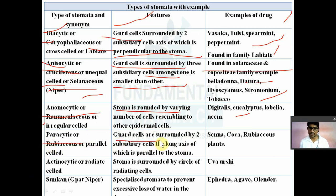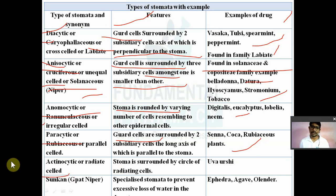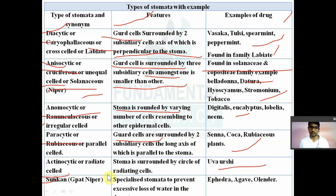The fourth type is paracytic stomata, also known as parallel-celled stomata or rubiaceous stomata. Here, guard cells are surrounded by two subsidiary cells whose axis is parallel to the stoma — guard cells and epidermal cells are arranged parallelly surrounding the stoma. This type of stomata is present in senna, coca, and rubiaceae plants. The fifth type is actinocytic stomata, also known as radiate-celled stomata, where the stoma is surrounded by a circle of radiating epidermal cells.